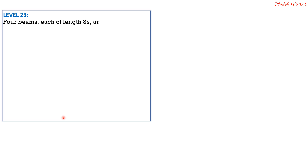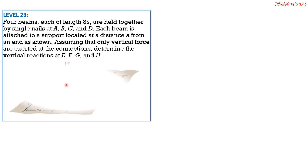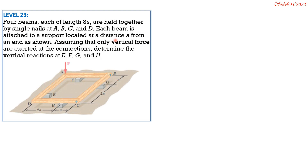Four beams, each of length 3A, are held together by single nails at A, B, C, and D. Each beam is attached to a support located at a distance A from an end. Assuming only vertical forces are exerted at the connections, determine the vertical reactions at E, F, G, and H. Let's draw the FBD of each of the four beams to guide our solution.